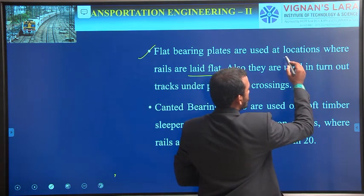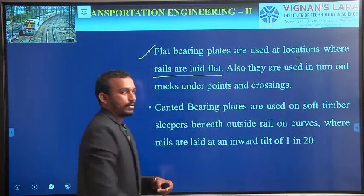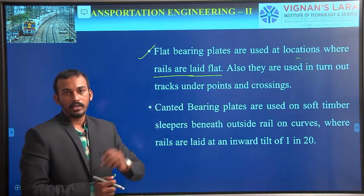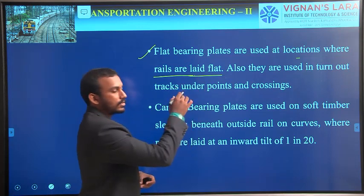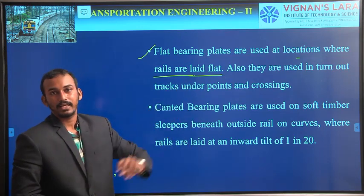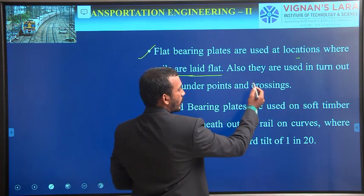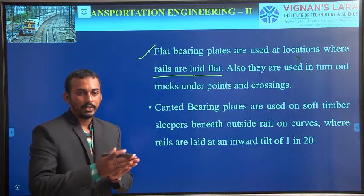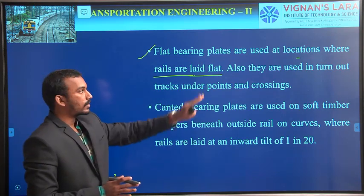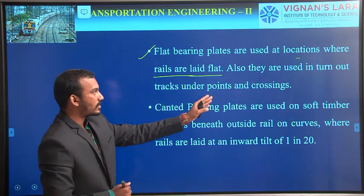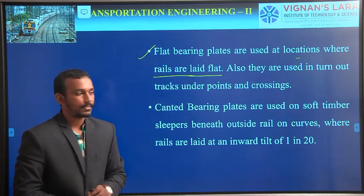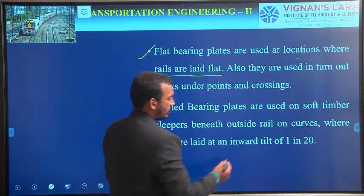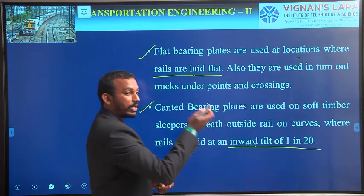We cannot use flat bearing plates where rails are laid flat — rails must never be flat, they must be tilted inward at a slope of 1 in 20. In these cases, we use flat bearing plates, but those are very rare cases. They are also used in turnouts, tracks, and points and crossings. If we need to move from one track to another track, the load may be very high due to impacts, so in such cases we use flat bearing plates. The second type is canted bearing plates — they are used to maintain the inward tilt of 1 in 20.